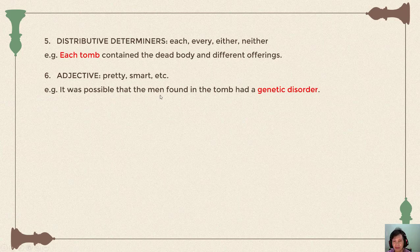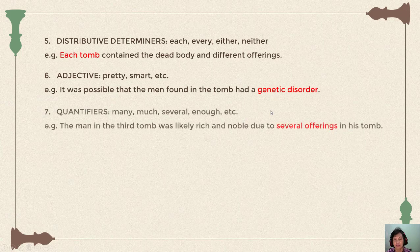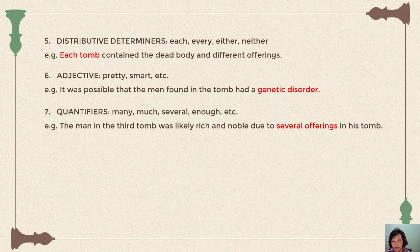The next type is quantifiers: many, much, several, enough, etc. Be careful with quantifiers because some apply to countable nouns and others to uncountable nouns. For example, 'many' is for countable and 'much' is for uncountable. Example: 'The man in the third tomb was likely rich and noble to leave several offerings in his tomb.' 'Several' is used for countable nouns, so the noun must be in plural form.